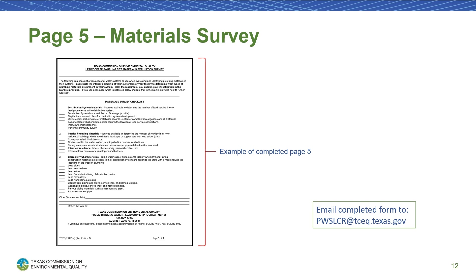Page 5 of the form is the material survey. On this page, you'll check off which options you used to evaluate the plumbing materials of your sites to determine their tiers. At least one option from each of the three sections needs to be checked off. If the Corrosivity Characteristics section does not apply to your system, you can write Not Applicable with a short explanation in the Other Sources Explain section. Although some of the sections ask you to provide maps, this is not a requirement and the form will still be accepted without the inclusion of maps. Once you've completed the form, you can mail it to the address at the bottom of page 5 or email it to pwslcr@tceq.texas.gov. If you choose to submit the form via email, you'll receive a confirmation email once the form has been reviewed and accepted that includes a list of your updated sample sites.